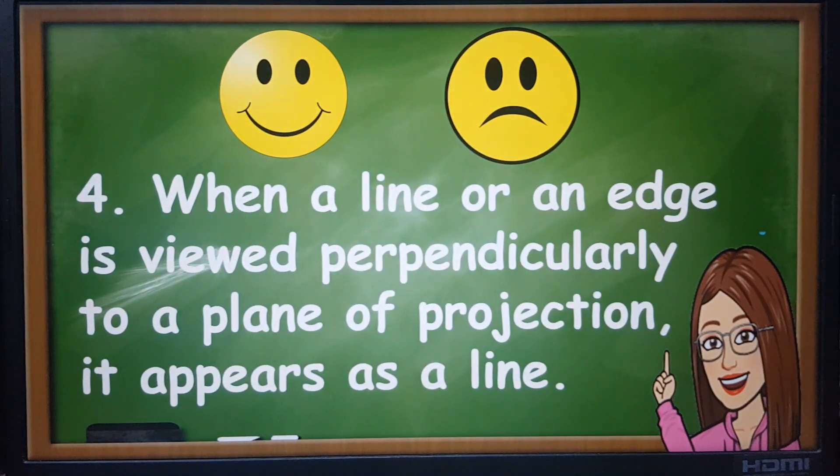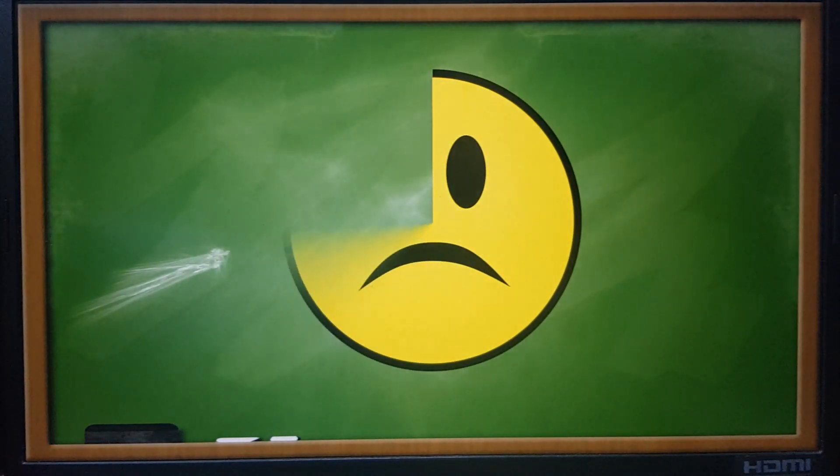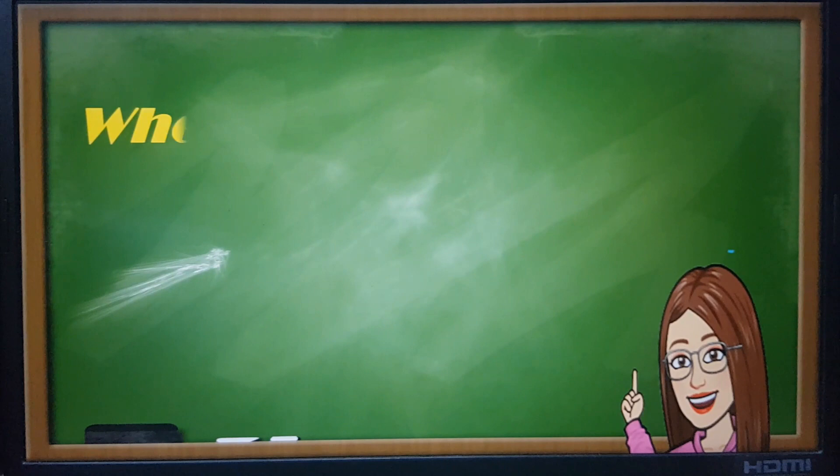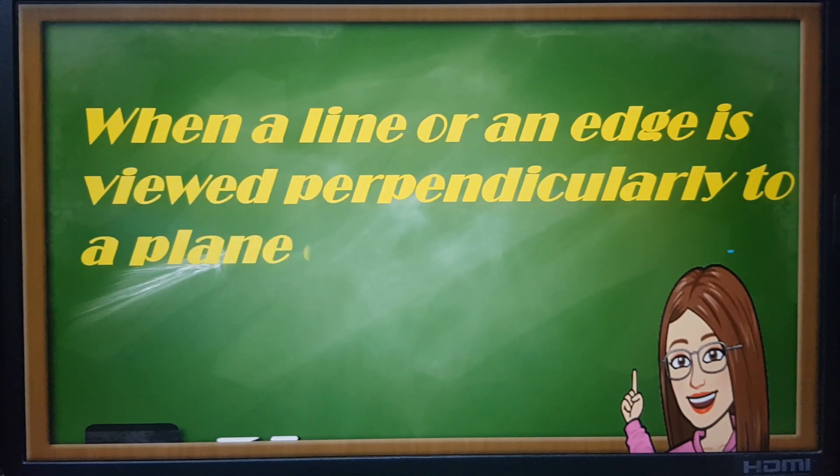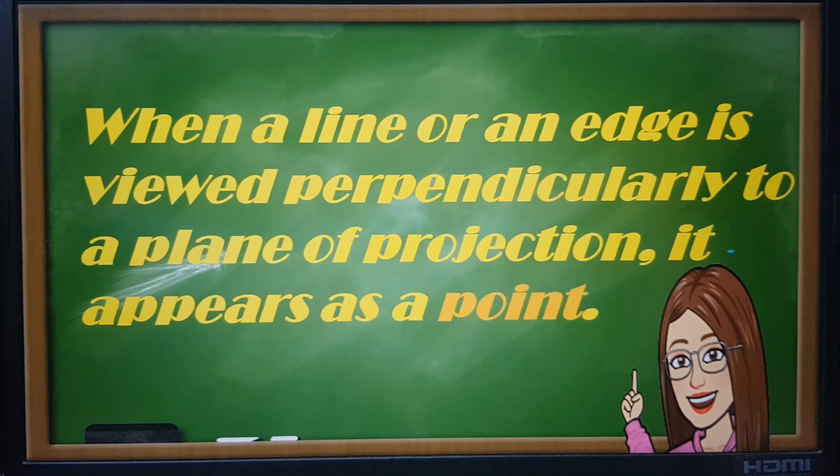How about number four: when a line or edge is viewed perpendicularly to a plane of projection it appears as a line. Great, the answer is sad face. Why? Because when a line or an edge is viewed perpendicularly to the plane of projection, it appears as a point.